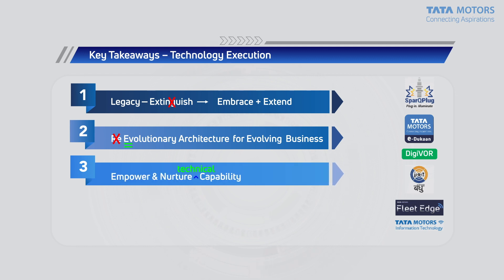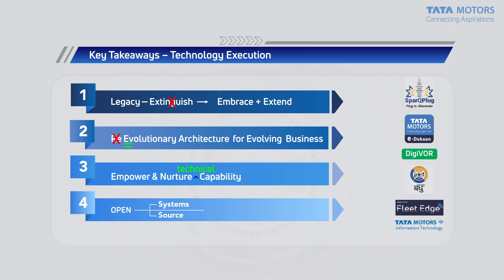Another core aspect of digital transformation is about empowering and nurturing capability — specifically technical capability — because today the line between technology and business has not only blurred, it has actually disappeared. It seamlessly moves back and forth between the two, and understanding both is extremely crucial for everyone involved in delivering a digital system. Finally: open systems, open source, both enabled with an open mind.